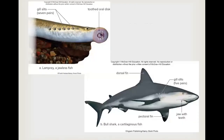Here we have examples of jawless and cartilaginous fishes. The lamprey has a toothed oral disc with no jaw used to suction onto another fish and tap its circulatory system; gill slits allow water to pass in and out for gas exchange rather than through the mouth. The bull shark, an example of a cartilaginous fish, is noted by its jaw with many rows of teeth and multiple fins — dorsal, pectoral, and caudal fins — and gill slits through which water must pass after entering the mouth for gas exchange.